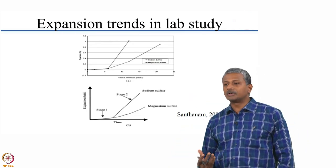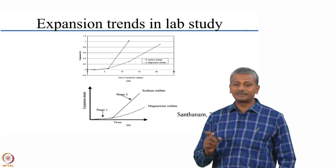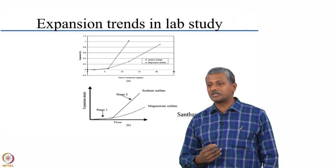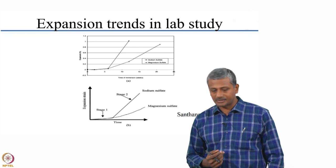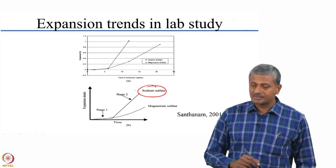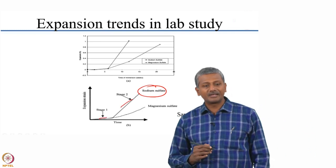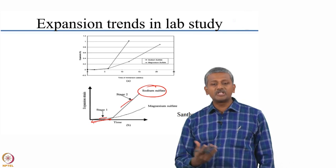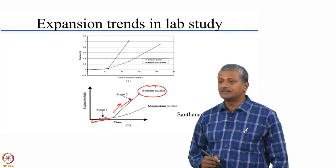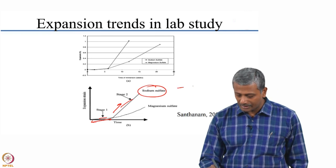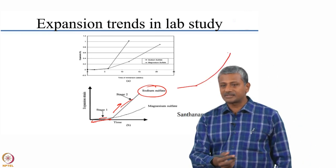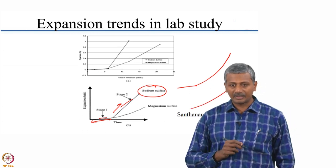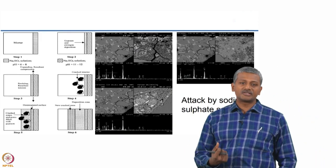In lab studies done across the world, these are generally based on continuous immersion of mortar bars in sulphate solutions. Mortar is used because it is faster to make than concrete and reactions can be studied at a smaller scale for quicker interpretation. When looking at chemicals like sodium sulphate, a two-stage mechanism is typically observed in the expansion process: a Stage 1 with quite small expansion, almost like an initiation process, followed by a rapid rise in the rate of expansion. For magnesium sulphate, a slow but steady rise of expansion is observed, almost a curve-type behaviour.